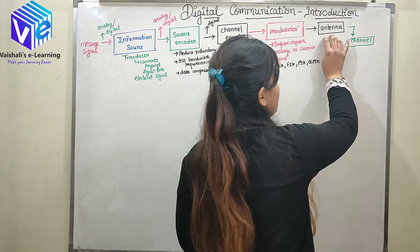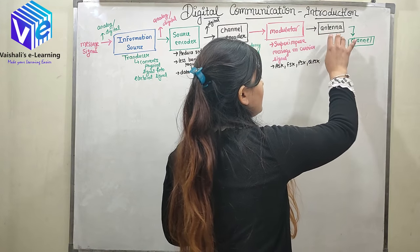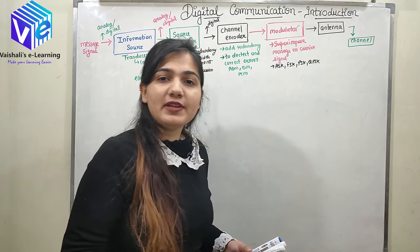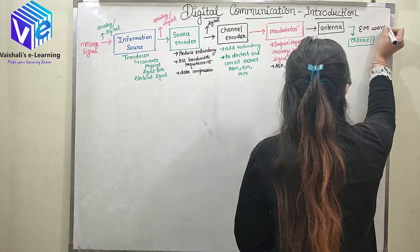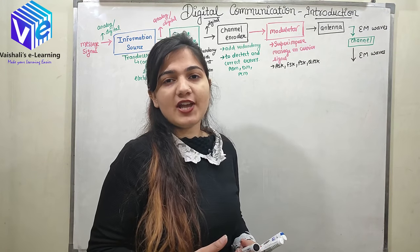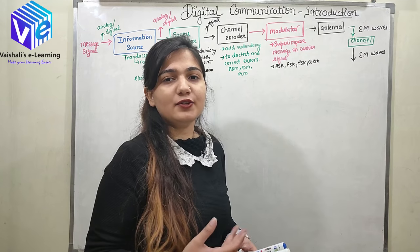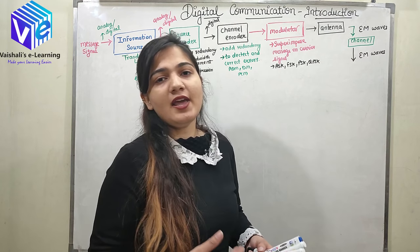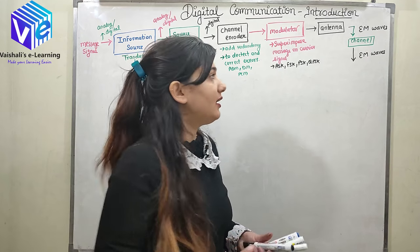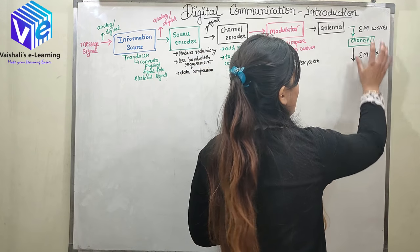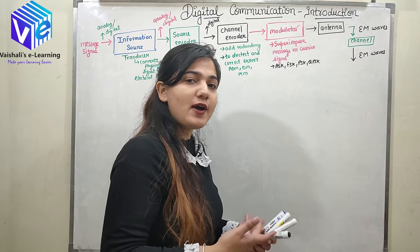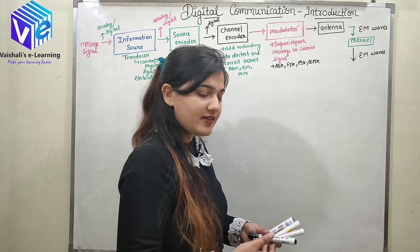After the modulator, we have the antenna, which takes the signal and converts it into the form of EM waves. The EM waves travel through the channel, which could be a coaxial cable, the surrounding space, or even water. The EM waves travel through the channel and are received at the receiver. Now we will look at the block diagram of the receiver.